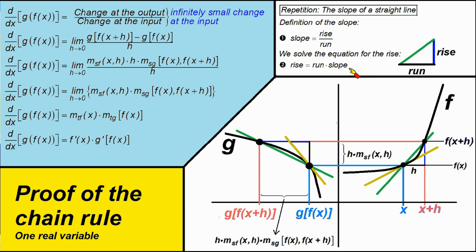Now we make a short repetition. What is the slope of a straight line? The definition of the slope is: slope is the rise over the run. You see it here in this triangle — this is the rise, and this is the run, and the slope is rise over run. Now we solve this equation for the rise, and we get: rise equals run times slope. In our example, the slope is about one because the rise and the run are the same.